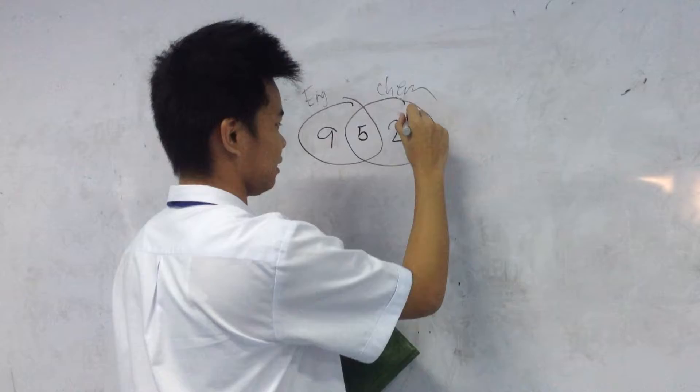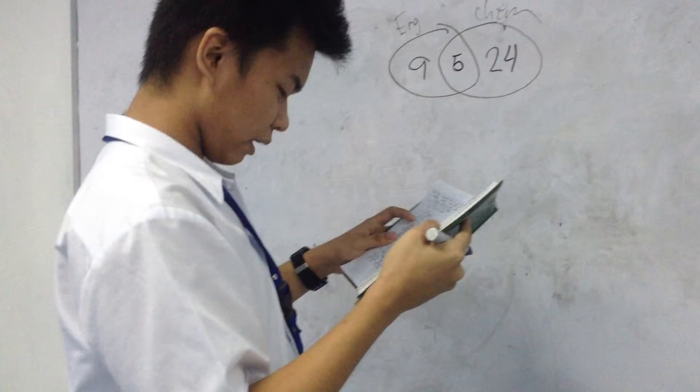Now adding these up, 9 plus 5 plus 24 equals 38 students in English or chemistry.